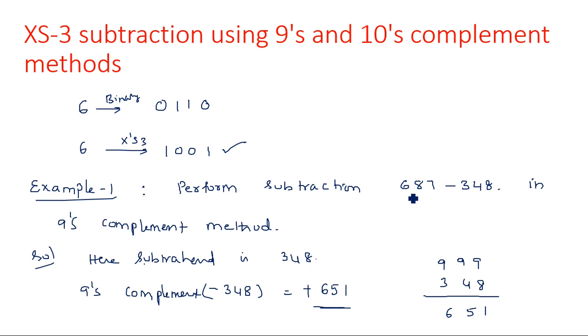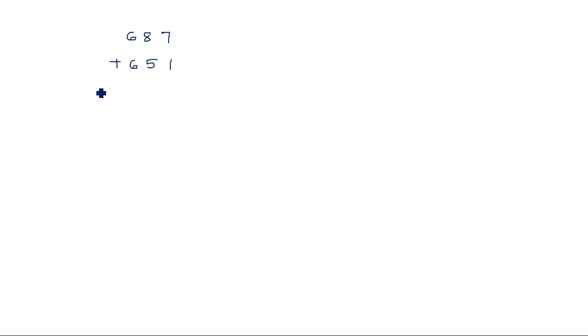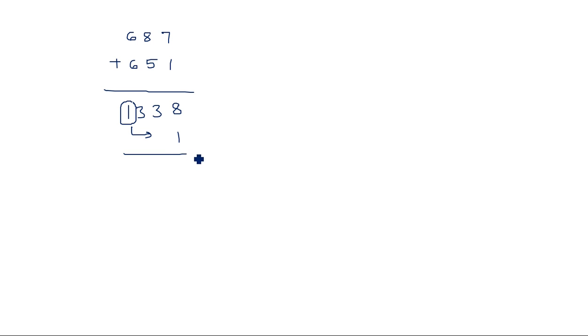We can directly add 651 to 687 to get the result. So 687 plus 651 gives: 8, 13 — so we get 1338. Here the carry must be again added back, which is known as end around carry.